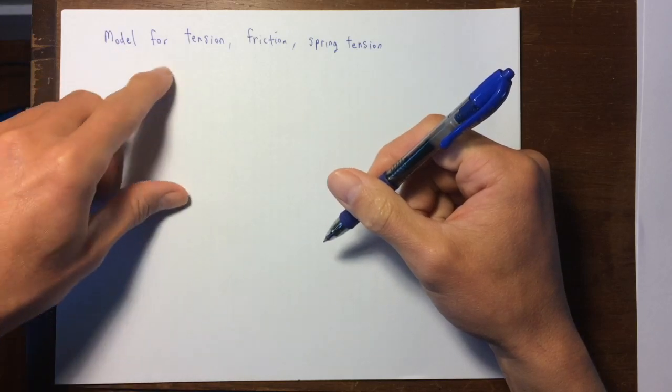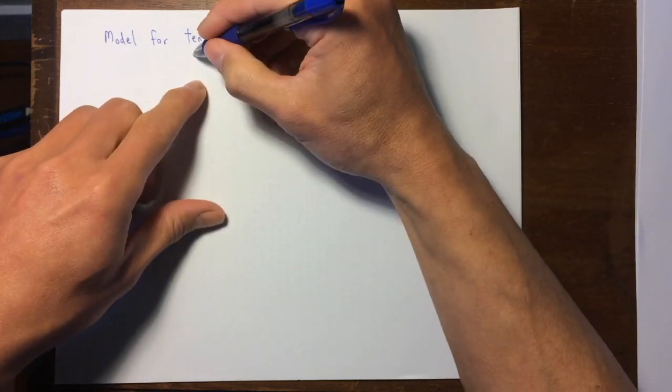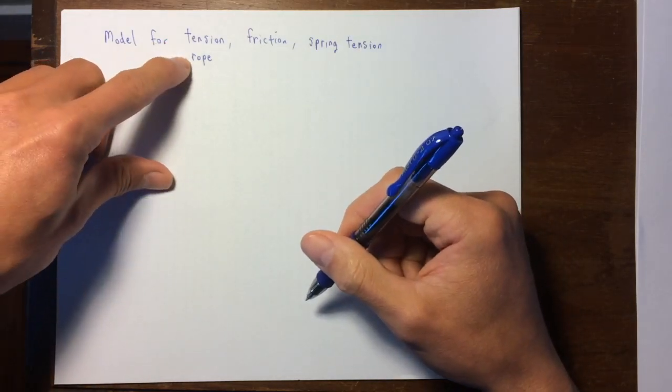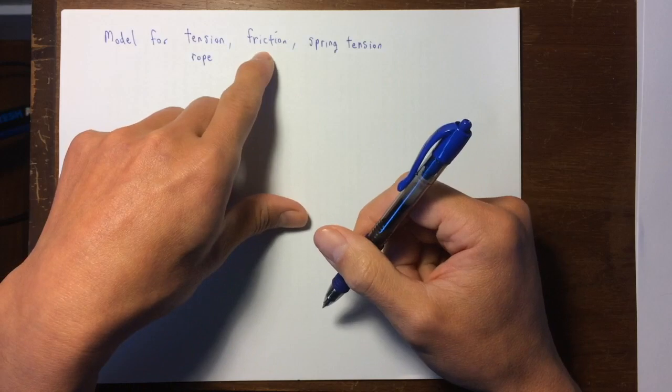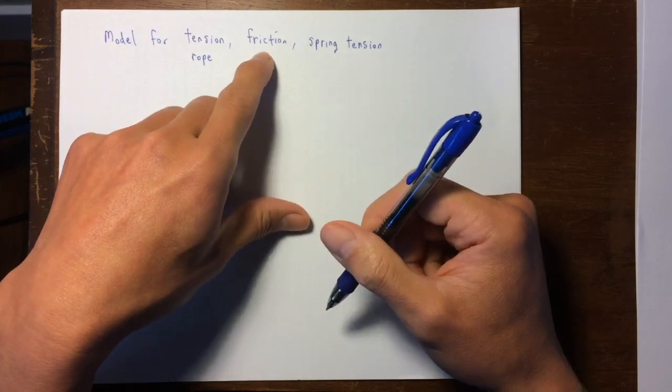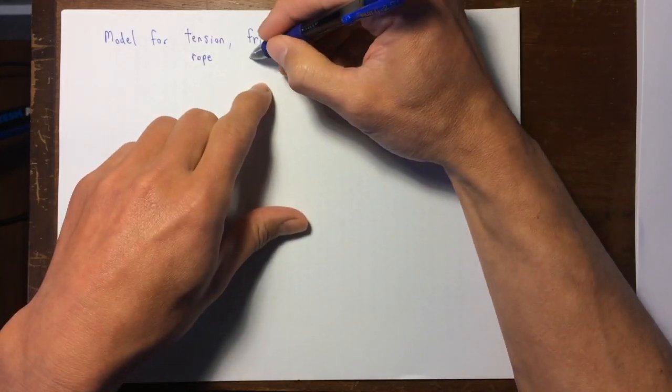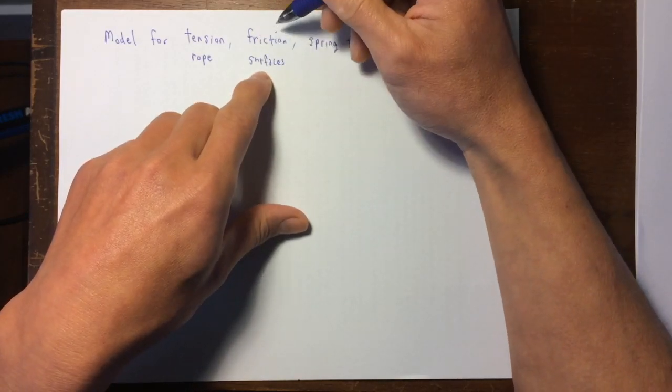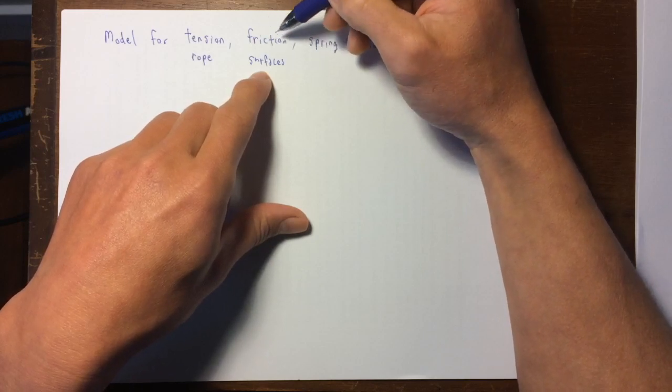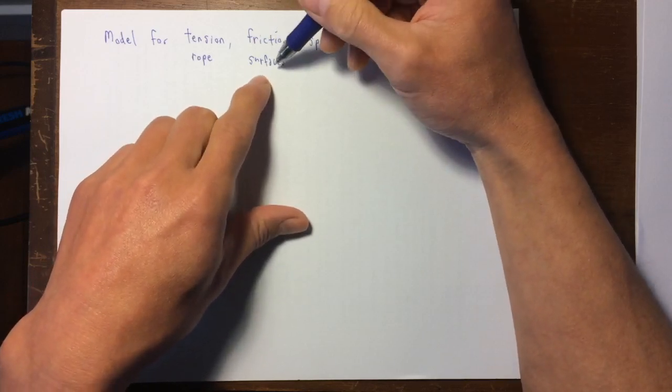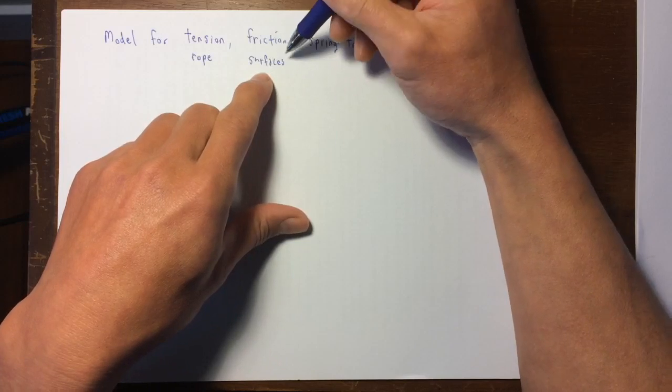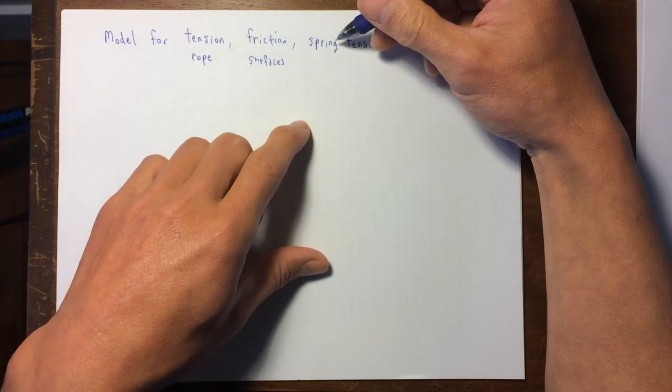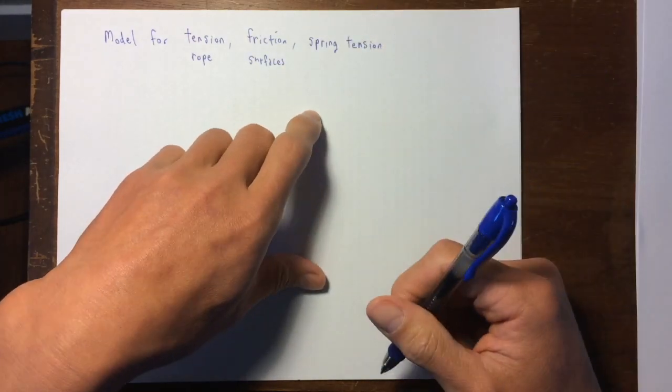So I'm going to model how tension in a rope or a string can lead to forces on different objects in a problem. I'm going to show you a simple model for friction between surfaces of objects, solid objects. So we're not going to consider air drag or anything of that sort, but this is just two surfaces rubbing against each other. And then this sort of speaks for itself. It's about springs, things that can stretch like rubber bands.